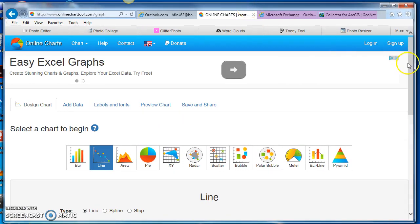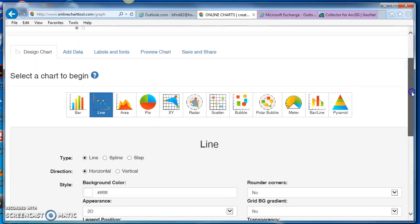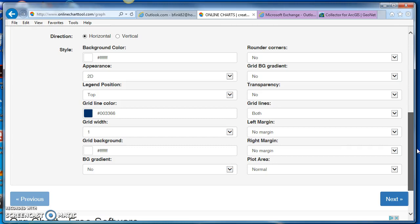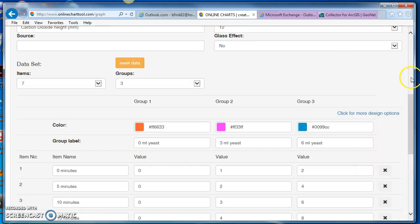When you go to the web page for the graph, you'll choose line graph and use the defaults. Make sure it's horizontal. You're going to set up seven items and three groups.